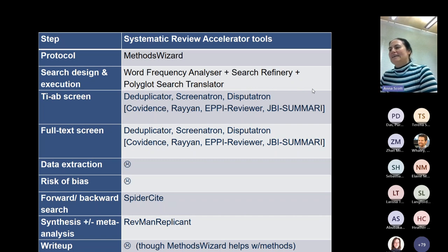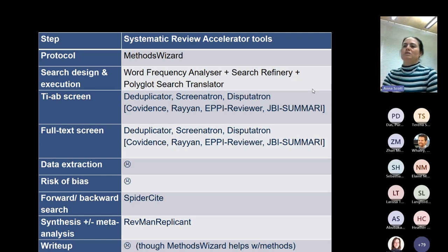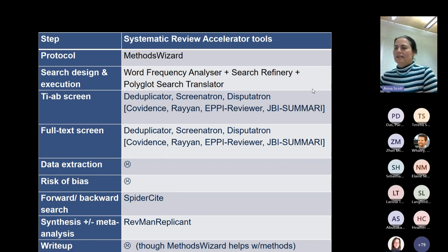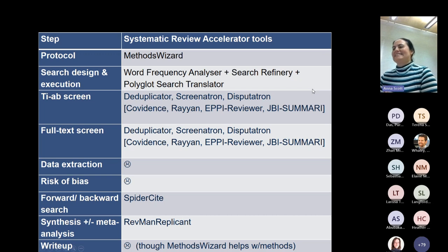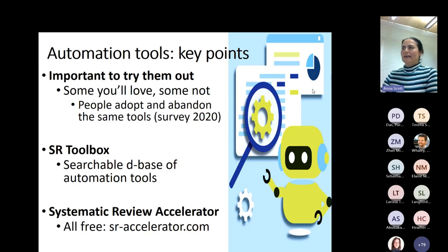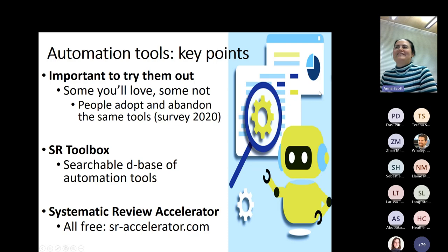For title/abstract and full-text screening: we use Deduplicator, Screenatron, and Disputatron, which do exactly what they sound like. There are also other options: Covidence, Rayyan, Appie Reviewer, JBI SUMARI, and others. Data extraction and risk of bias are a bit of an unconquered frontier — if you know of really good tools in that space, please let me know. For forward and backward search: SpiderSight. And Revman Replicant for meta-analysis write-up — you upload your RM5 file from RevMan and it spits out the accompanying text. Nothing will write your systematic review for you yet; we still need humans.